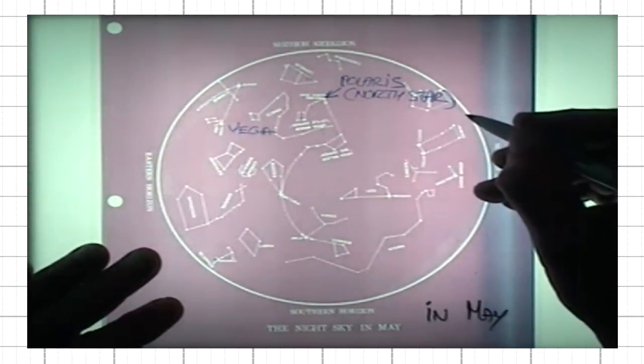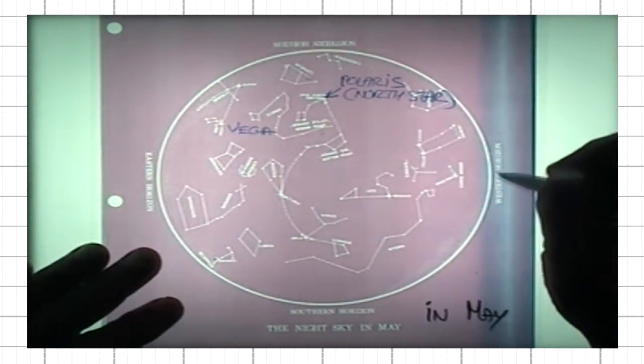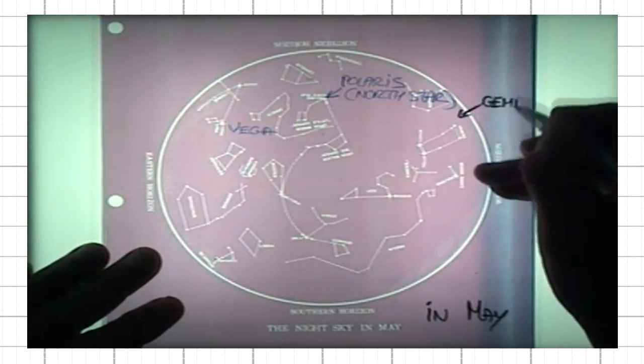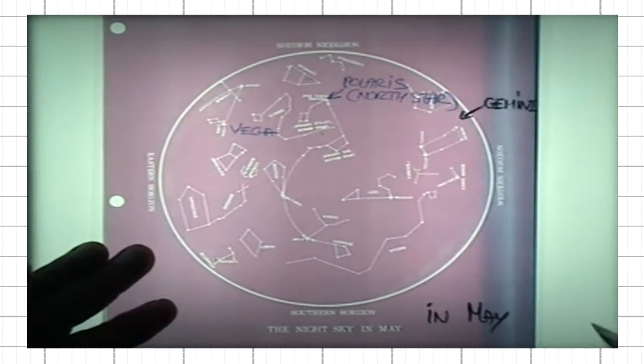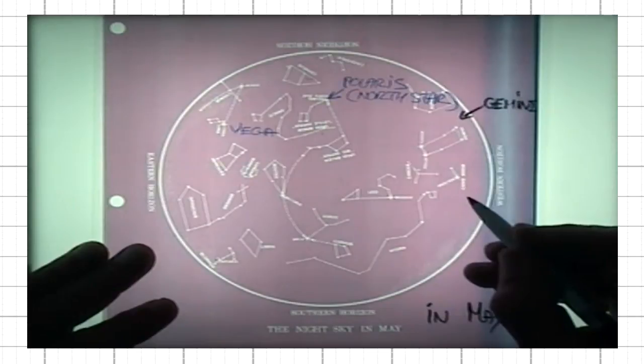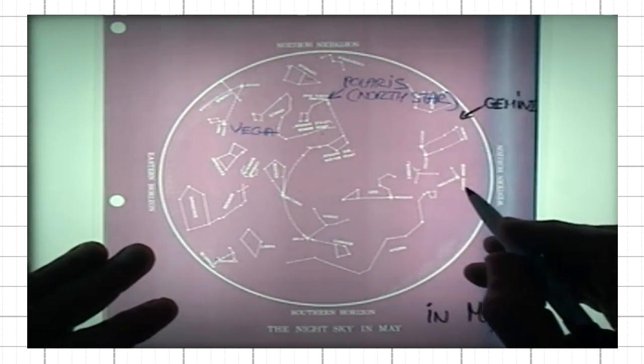What we can see in May is, for instance, close to the western horizon, there is Gemini. There is also Canis Minor, a little dog. Canis Major is Latin for big dog and Canis Minor is for little dog.